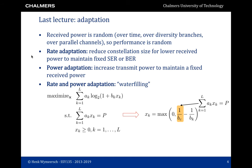Last time we talked about adaptation. We know that the received power is random due to multipath fading. If we don't take any countermeasures, we have a huge performance penalty compared to an additive white Gaussian noise channel with the same average power. We saw three methods for doing adaptation. Rate adaptation, where we adapt the size of the constellation based on the SNR but fix the transmit power — this turns out to work quite well.